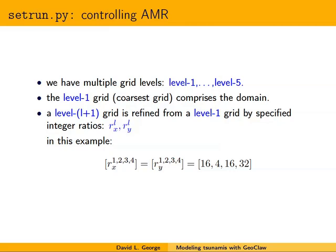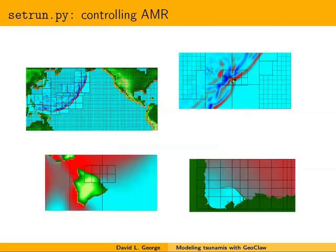One thing to notice: on finer grids we typically have to take more time steps because of the CFL condition—the waves will cross grid lines in less time. For tsunamis this is somewhat peculiar because the places you're most interested in—where it's shallower—are where wave speeds are slowest. On the highest level, one might choose the temporal refinement ratio to be much lower so you can get away with fewer time steps.